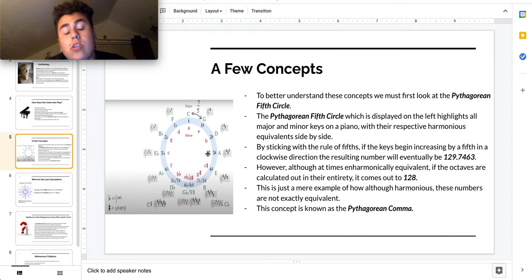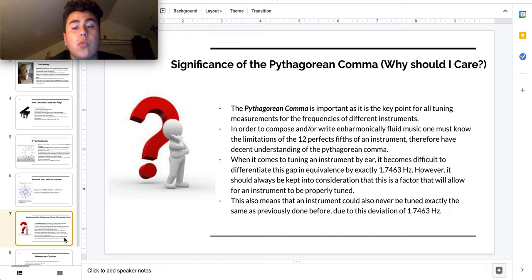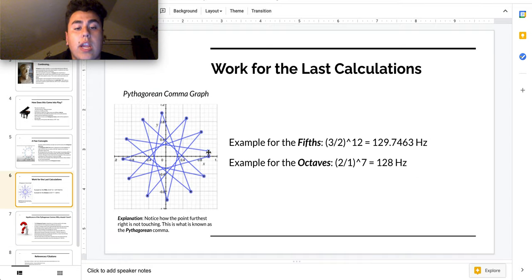And to this day, we still use that information that he found himself to know that there is a slight gap there. So what I mean by this deviation will always stay true is that although if somebody is really good at tuning, like a composer or an artist or whatever, you might not always get it correct when you're tuning these keys right here because of the deviation. It might sound like similar, but it'll never be the same as previously done before.